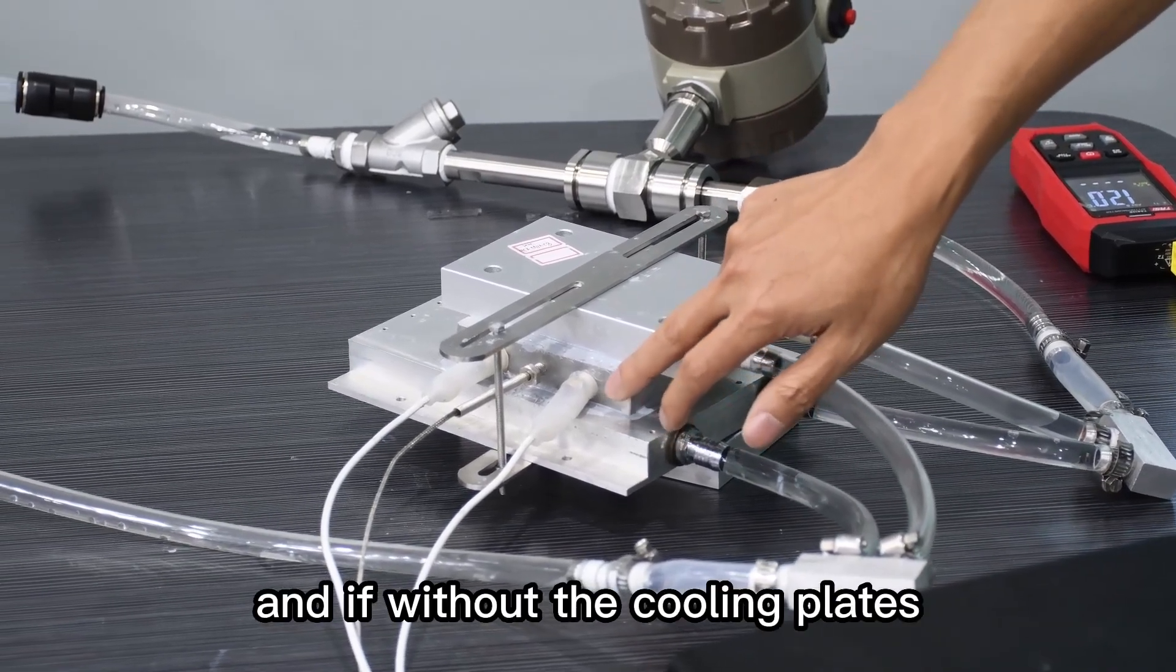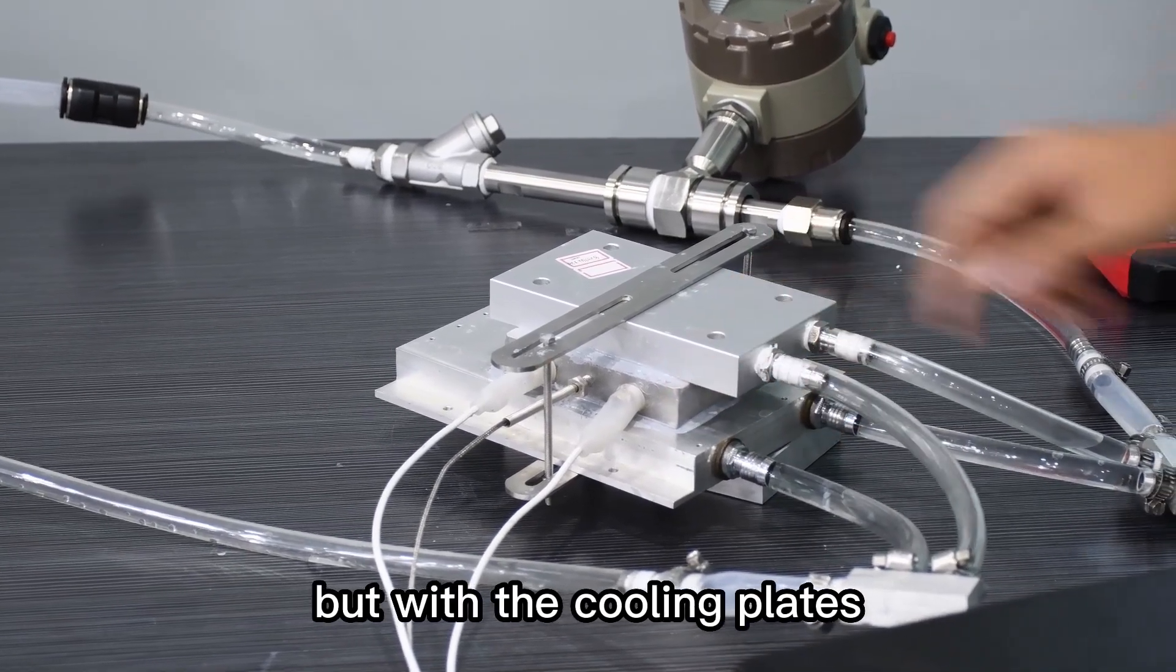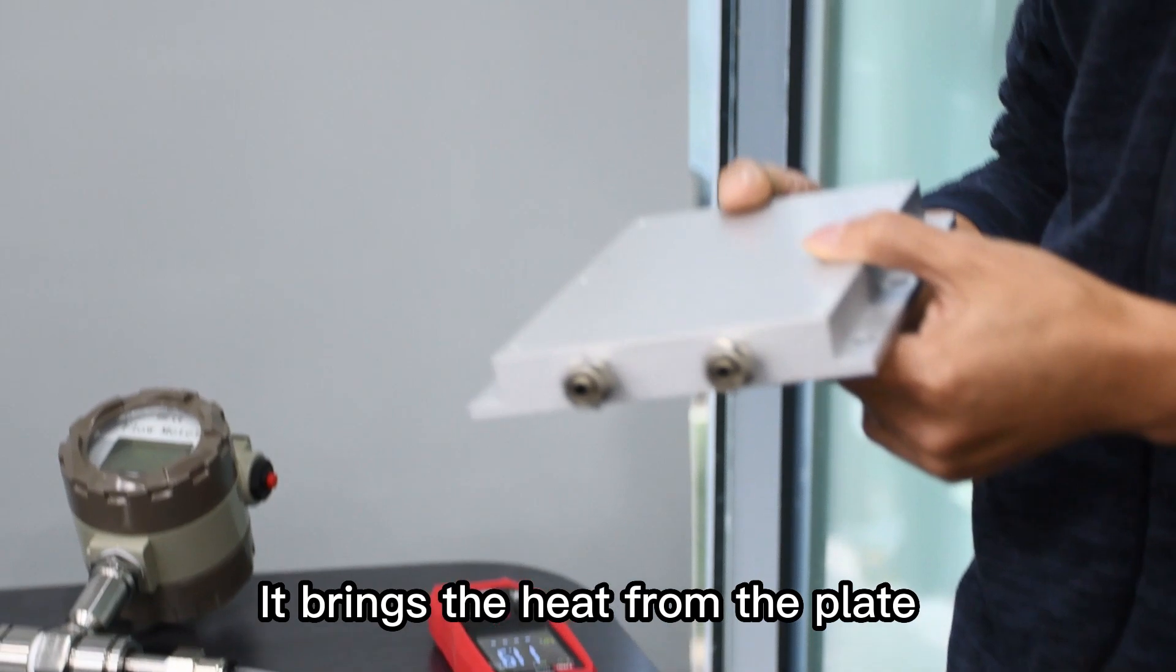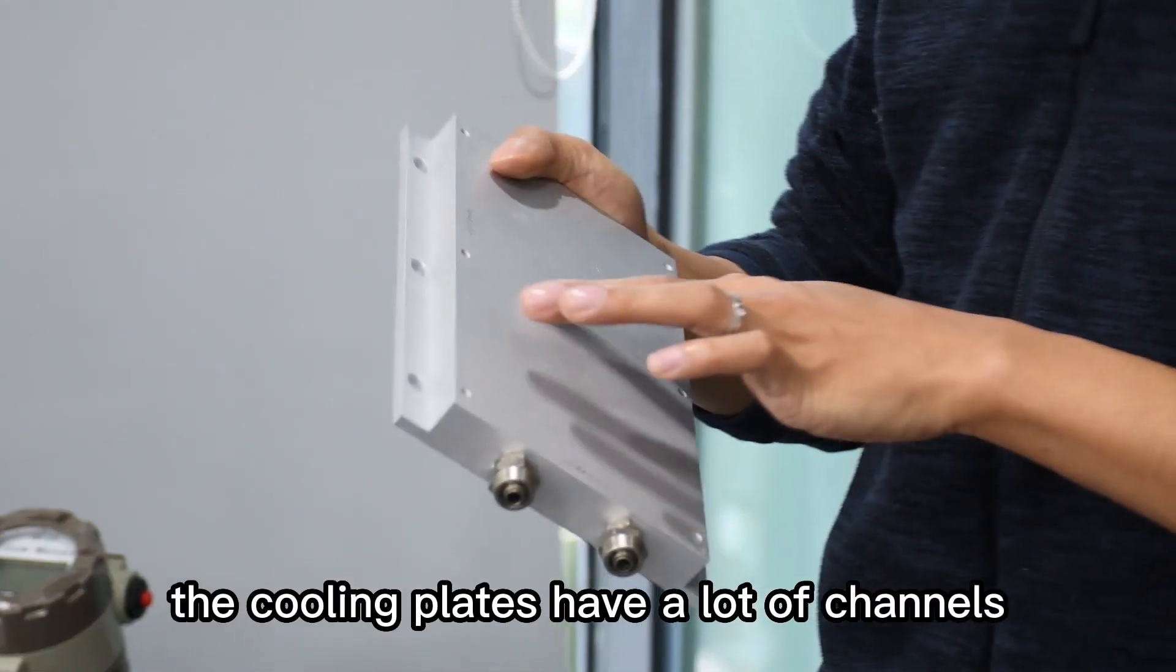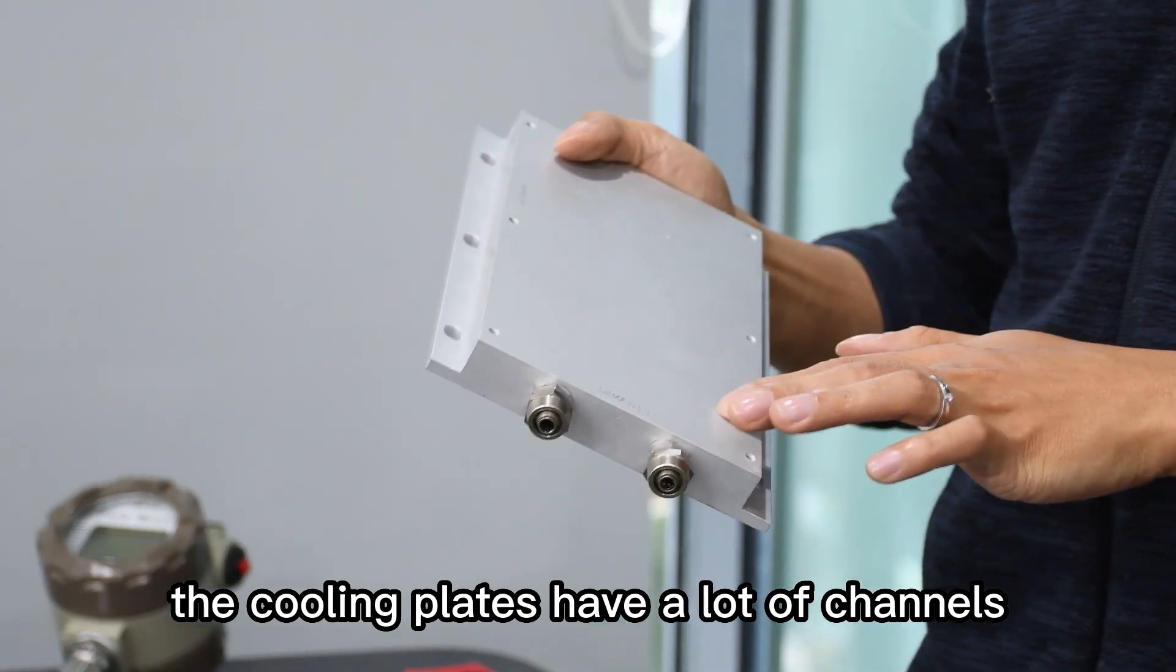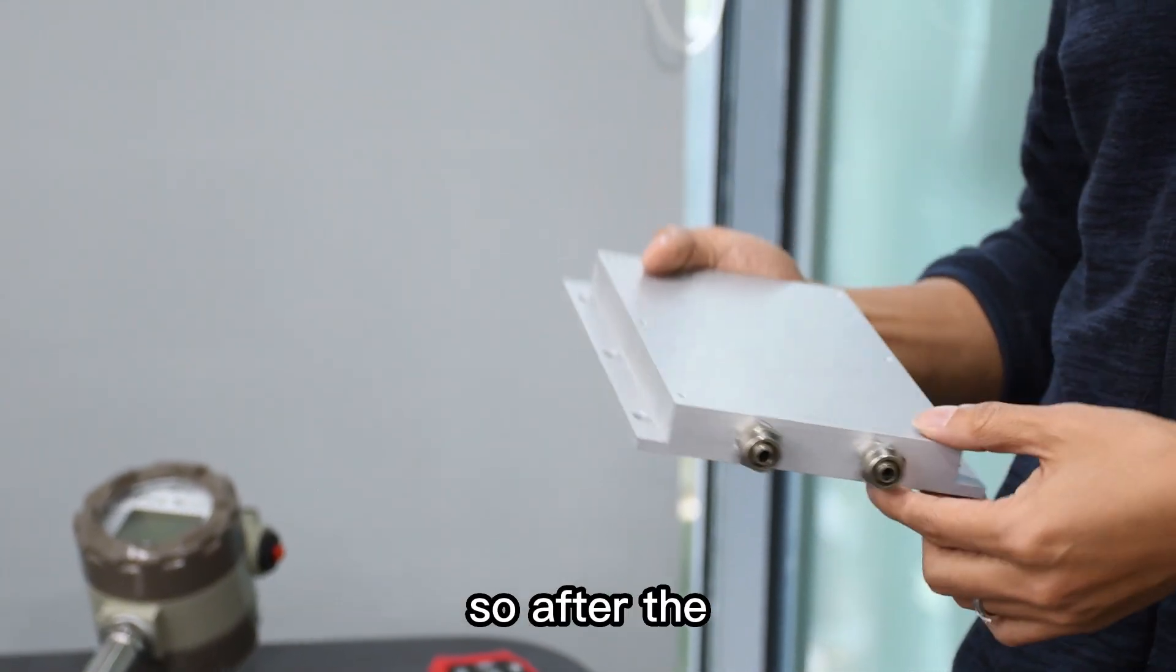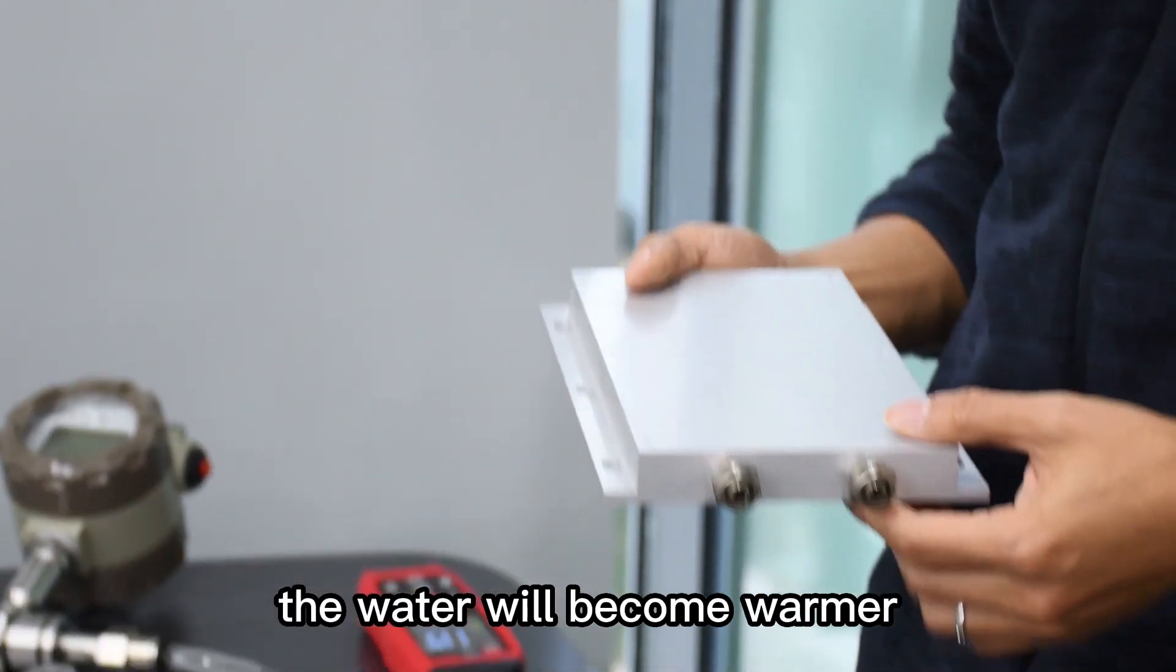Without the cooling plate, the temperature will become very high. But with the cooling plates, it brings the heat from the plates. The cooling plates have a lot of channels, which increases the heating area. So after the outlets, the water will become warmer.